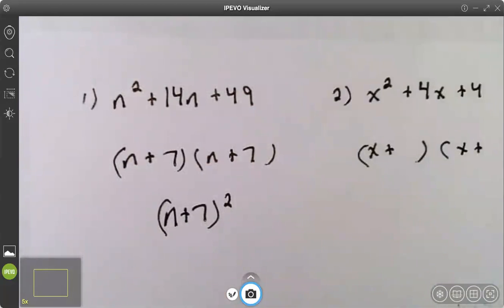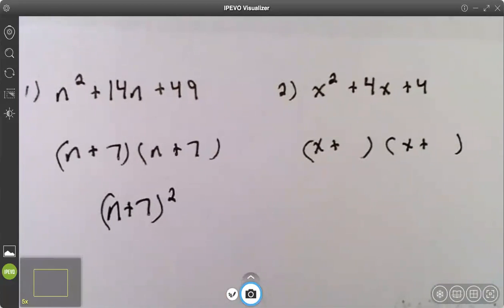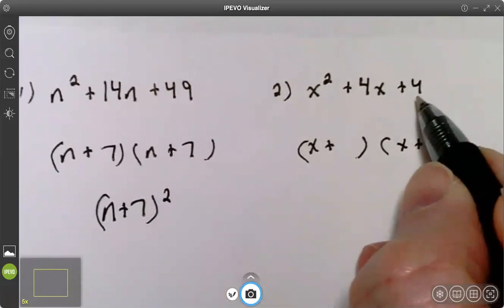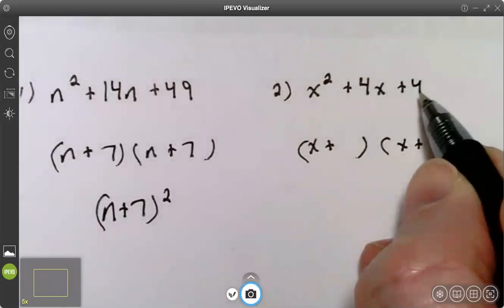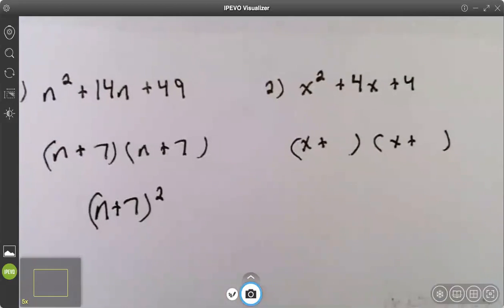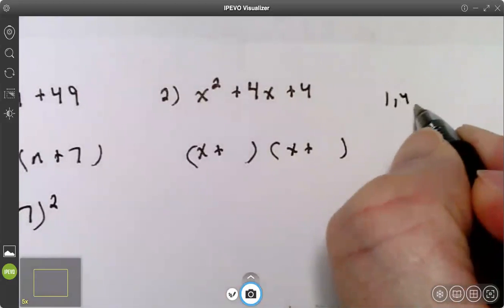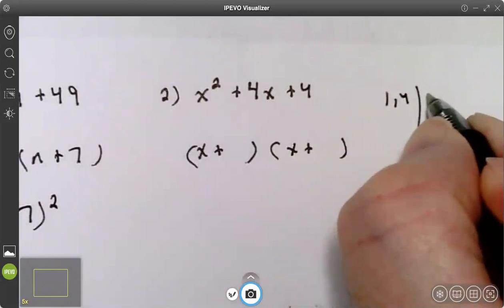Let's look at one more. All right. So I'm looking for two numbers that multiply together to give me four and add together to give me four. That should be pretty easy.